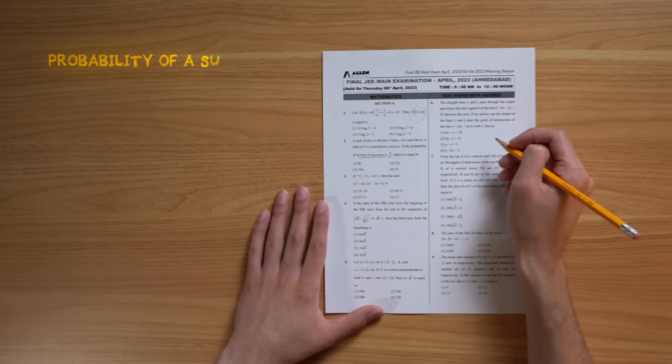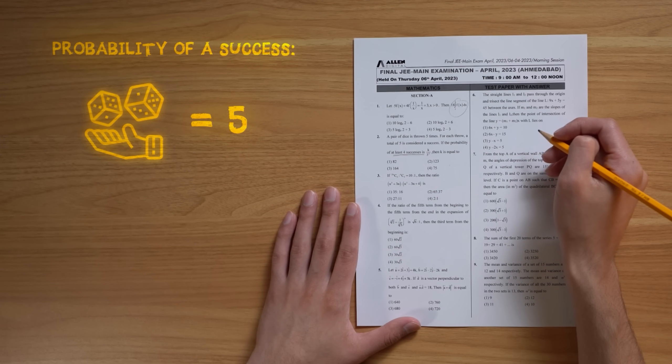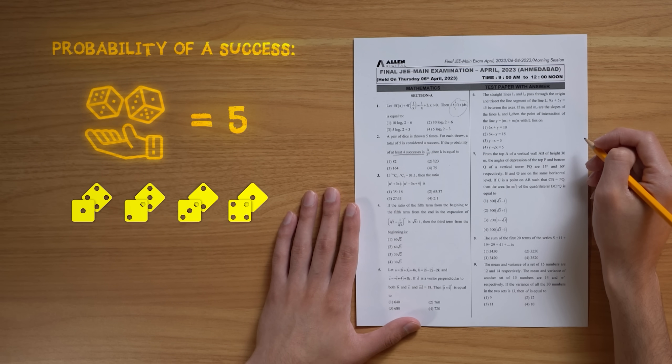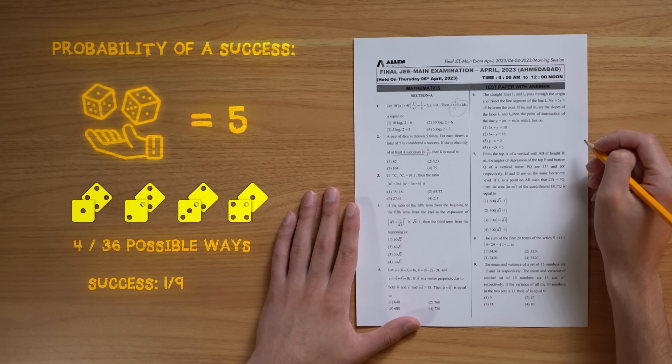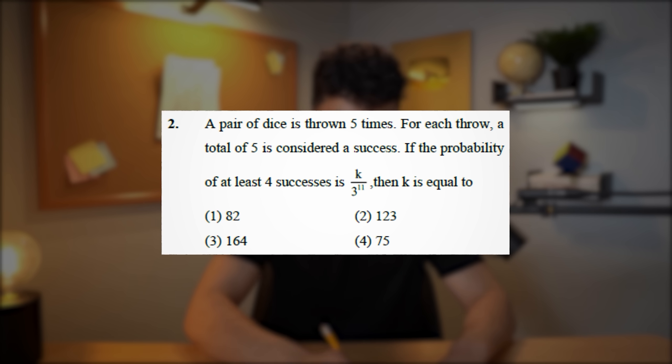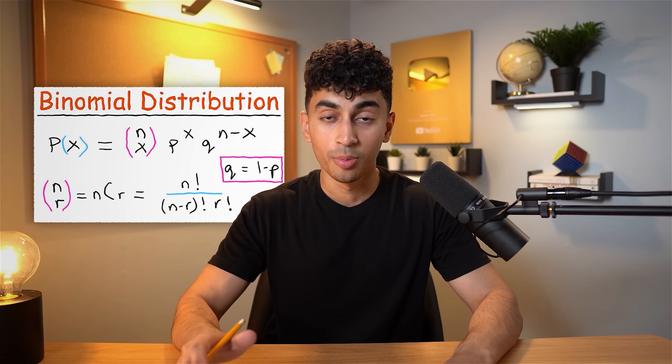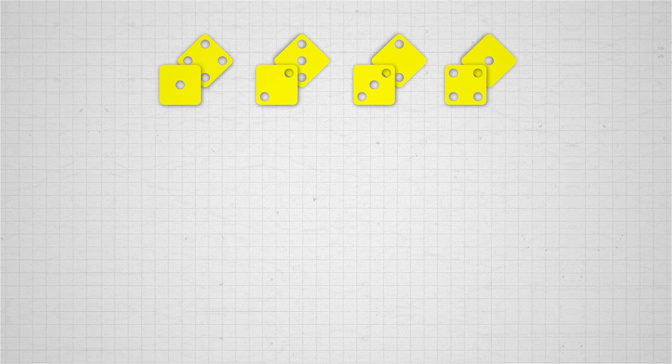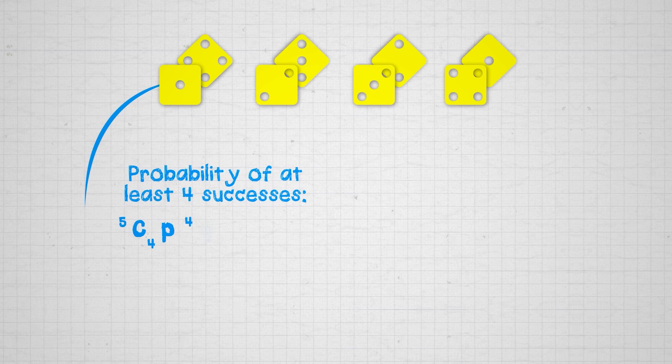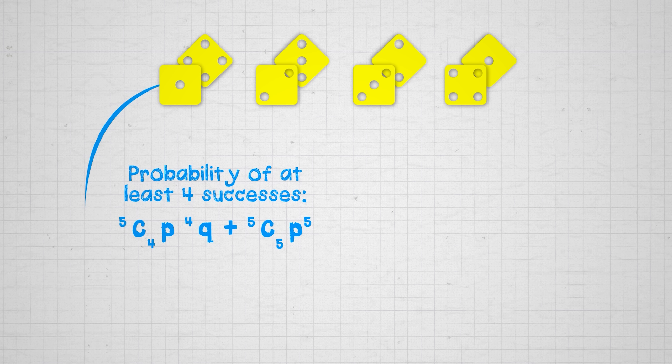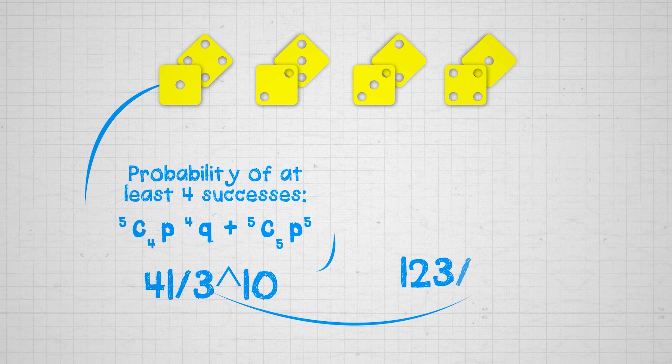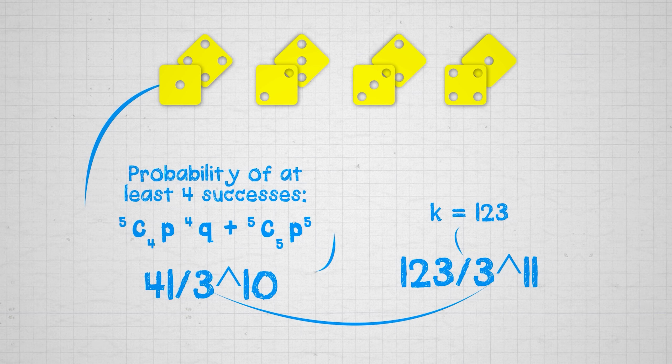Okay, so first we have to figure out the probability of a success. That is the probability that a pair of dice sums to five. We can roll a 1 and a 4, a 2 and a 3, a 3 and a 2, or a 4 and a 1. That's four possible ways out of 36 total, meaning that our probability of success is 1/9th, and our probability of failure is 8/9ths. Now let's call these values p and q. Now the question is asking us about the probability of at least four successes. So in other words, the probability of four successes or five successes. And to get that value, we'll add the probability of four successes to the probability of five successes. Now to calculate those two probabilities, we have to calculate the binomial distribution formula, which I will not dive into here. But if we simply plug the numbers in, we get that the probability of at least four successes is 5 choose 4 times p to the 4 times q plus 5 choose 5 times p to the 5th, which gives us 41 over 3 to the power of 10, which is equal to 123 over 3 to the power of 11, meaning that k equals 123. So the answer is 2.